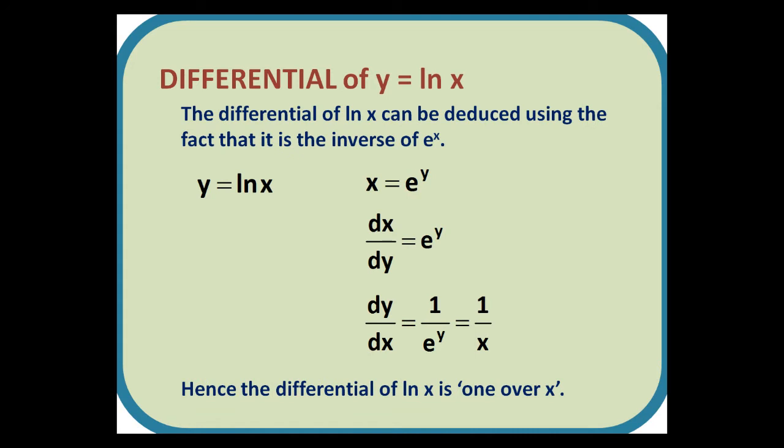Differential of y equals ln x. The differential of ln x can be deduced using the fact that it is the inverse of e to the x. Starting with y equals ln x, we write x equals e to the y. Differentiating with respect to y also gives us e to the y. Reciprocating gives dy by dx equals 1 over e to the y, which we can rewrite as 1 over x.